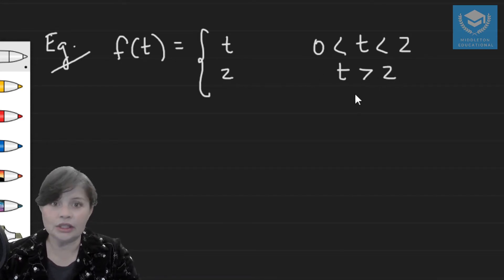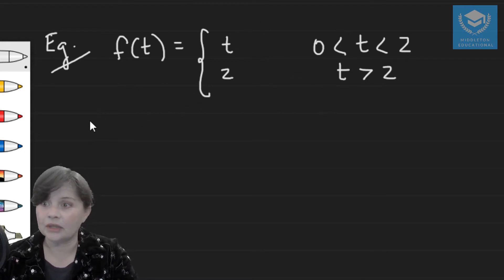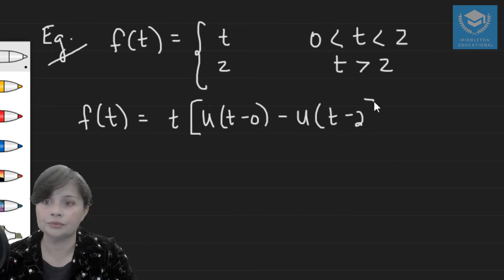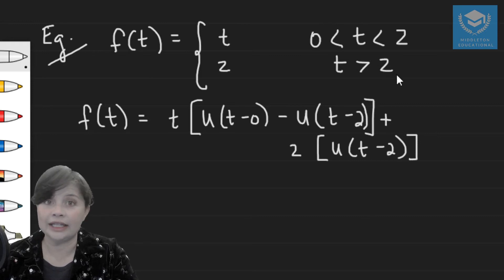So the first thing we need to do is to convert this into a Heaviside step function. So f(t) is going to be equal to the first part being t, and that's going to be u(t-0) minus u(t-2) plus two times u(t-2) because you don't have any upper limit.